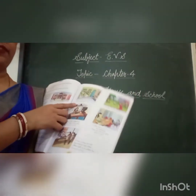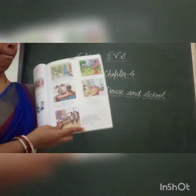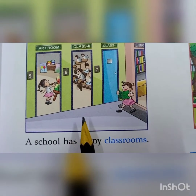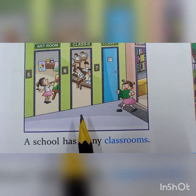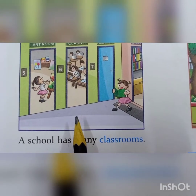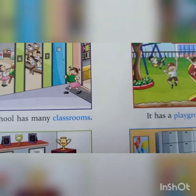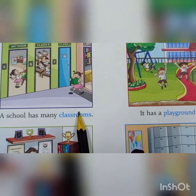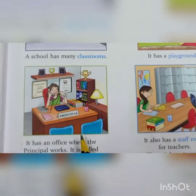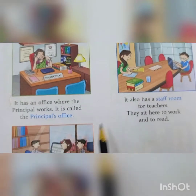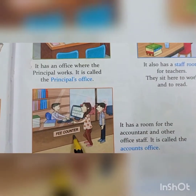Now you read with me this chapter about the school. Classroom, playground, principal office, staff room and fee counter. Now read the chapter.